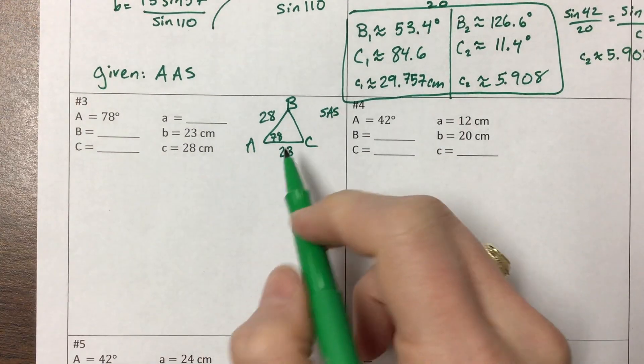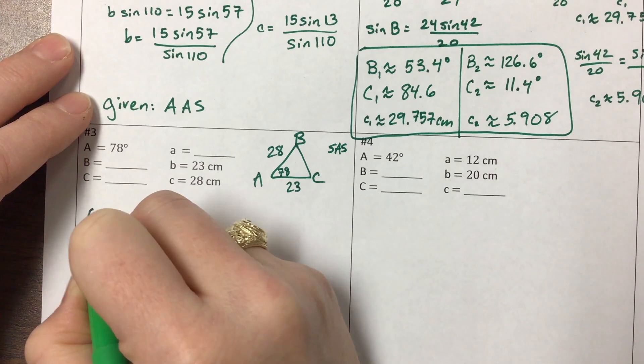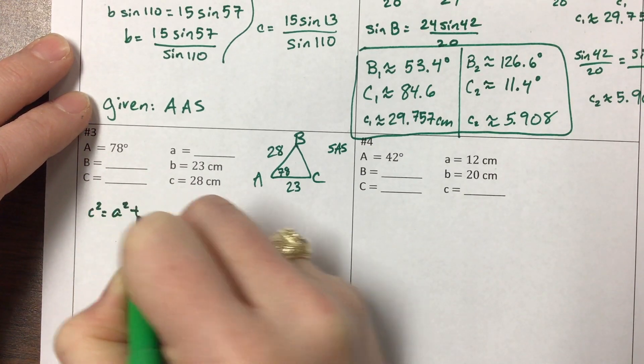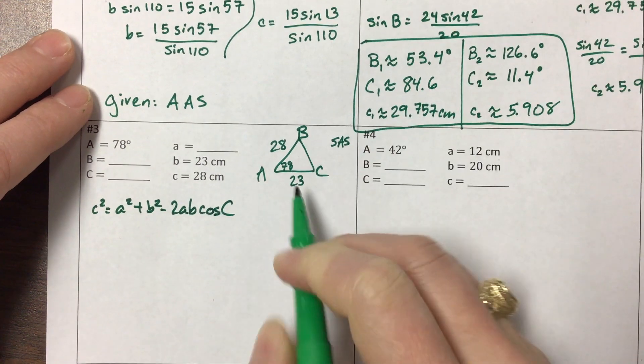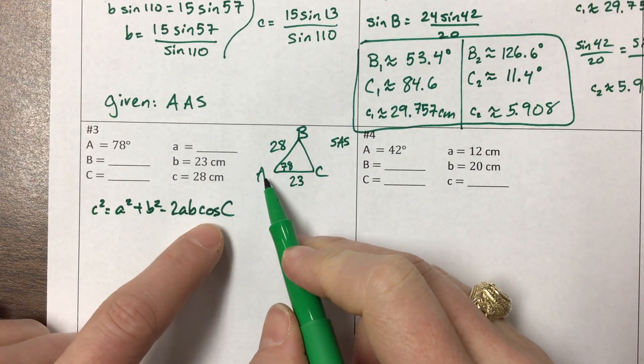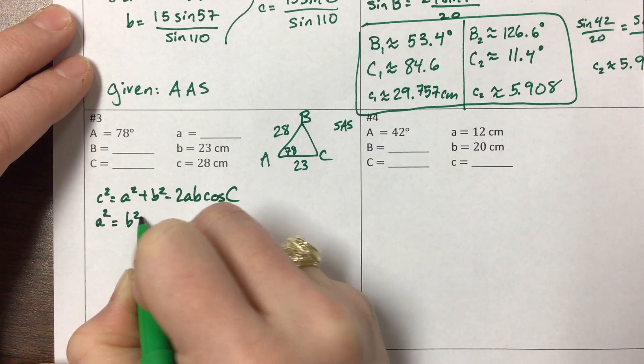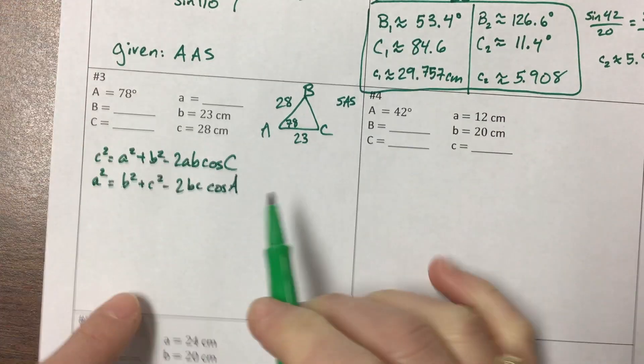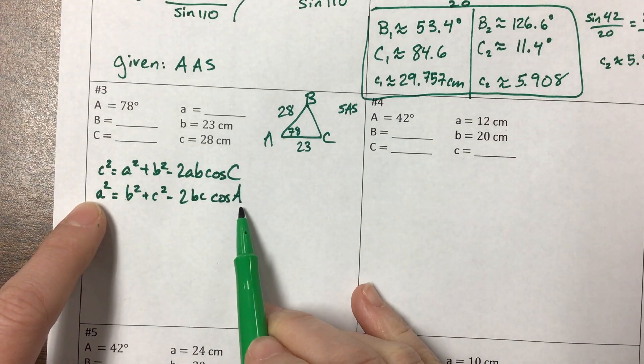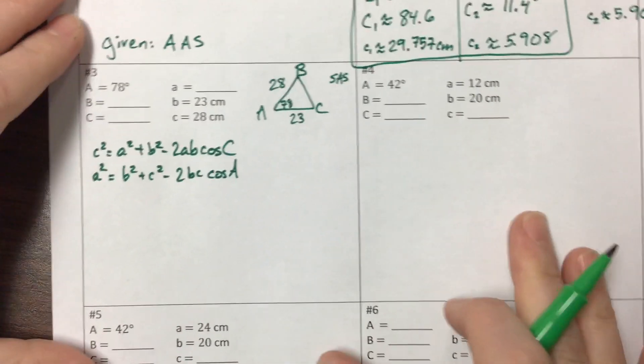So I typically just have the equation memorized: c² = a² + b² - 2ab cos C. But in this case, the angle I have is not angle C, it's angle A. So a² = b² + c² - 2bc cos A. The thing about this is that these letters match, and the other letters show up in the middle of the equation.